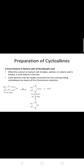Preparation of cycloalkanes from calcium and barium salts of dicarboxylic acids: When the calcium or barium salt of adipic, pimelic, or suberic acid is heated, a cyclic ketone is formed. Cyclic ketones may be readily converted into the corresponding cycloalkanes by means of the Clemmensen reduction. For example, calcium adipate on heating gives cyclopentanone.